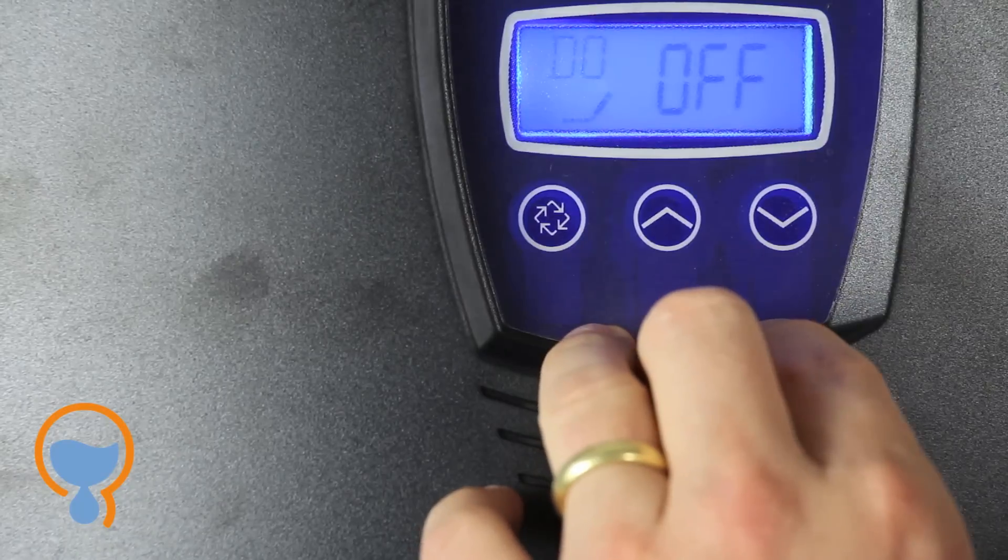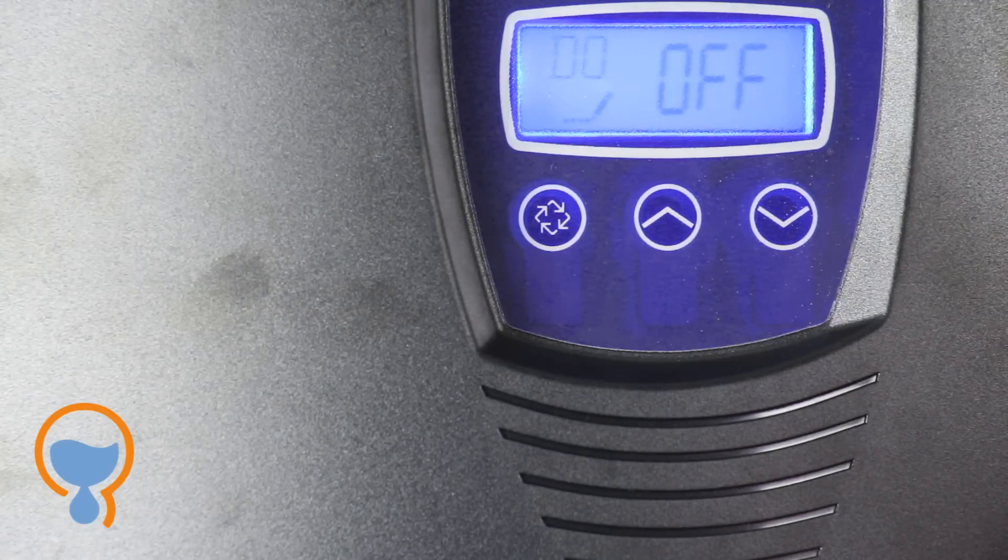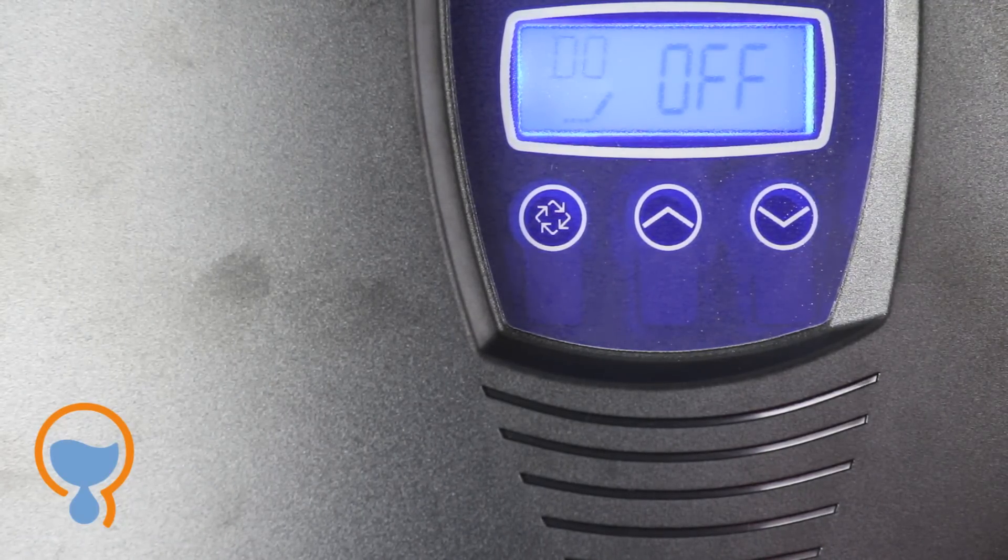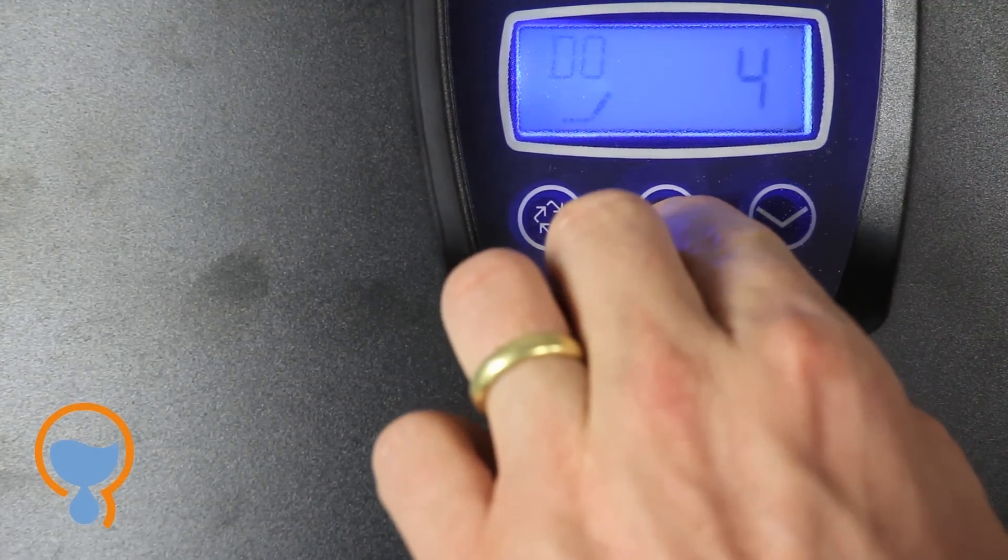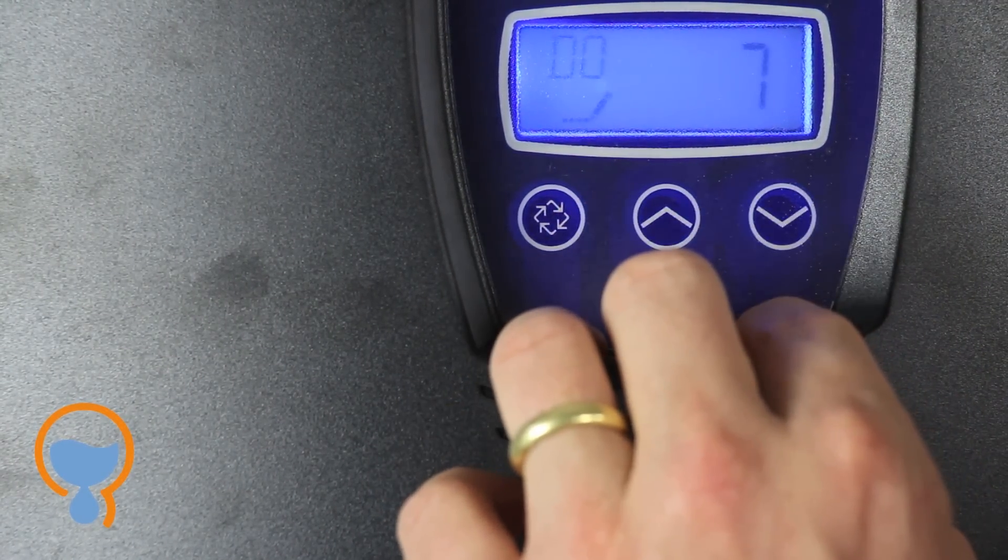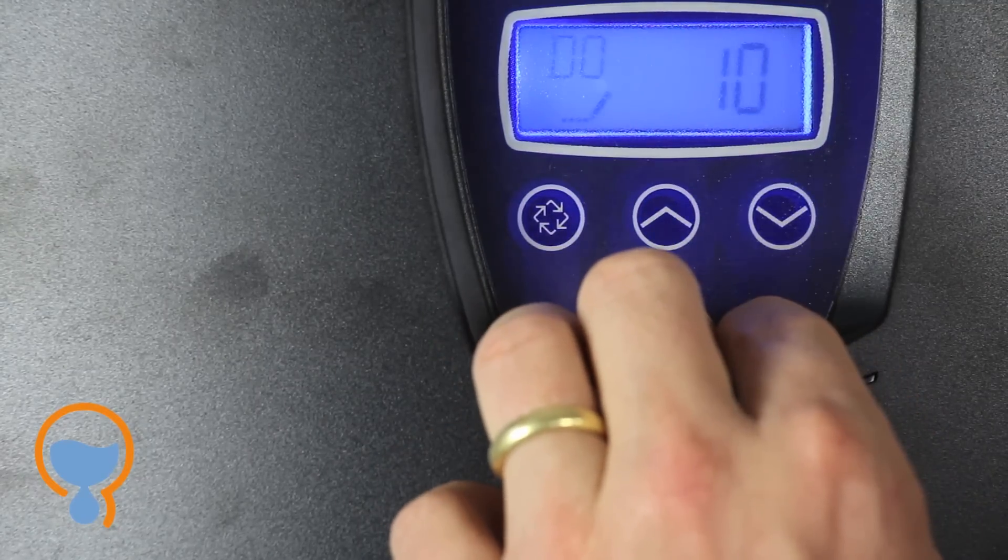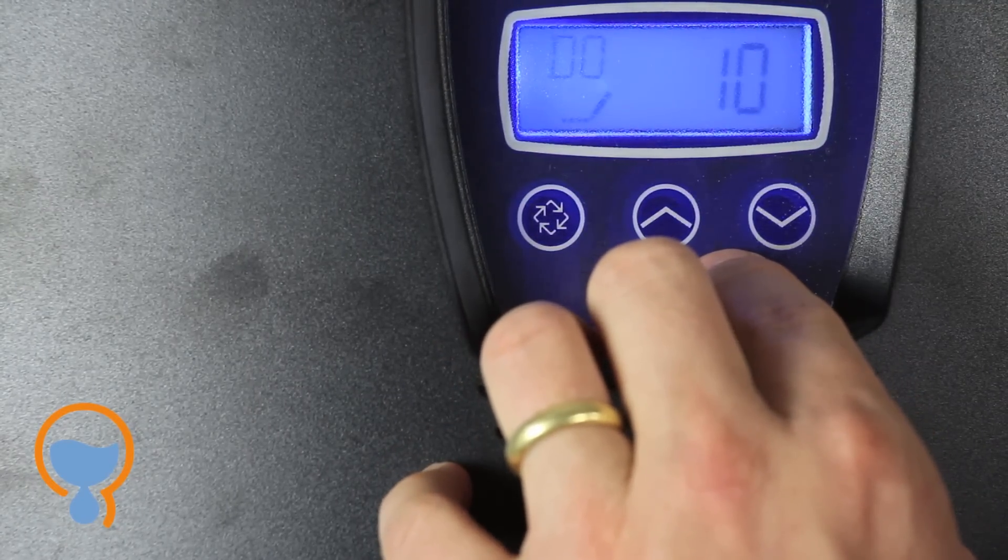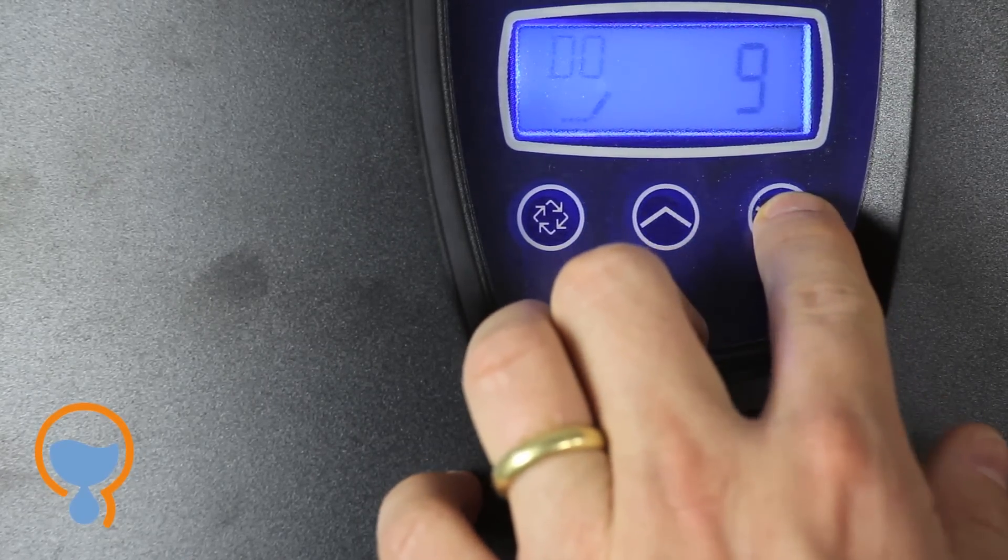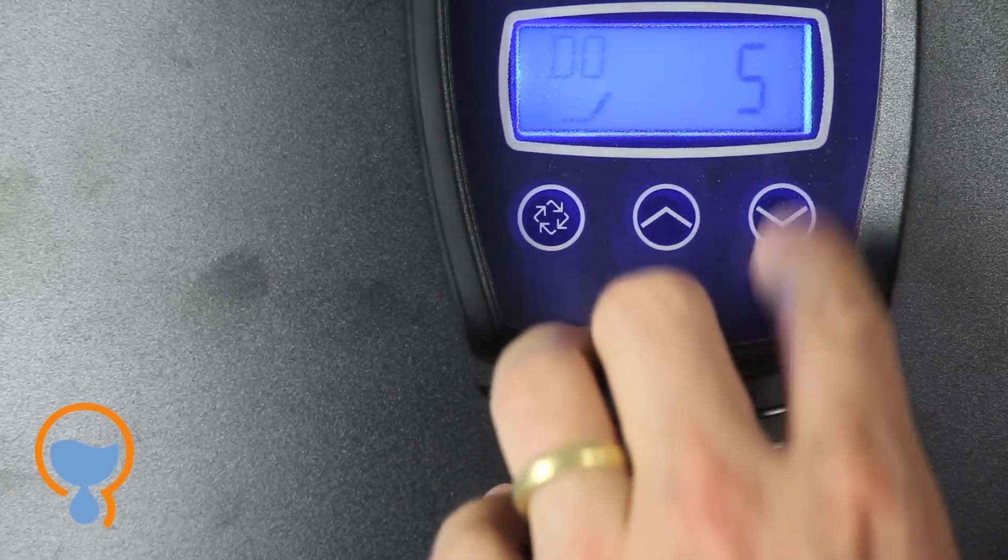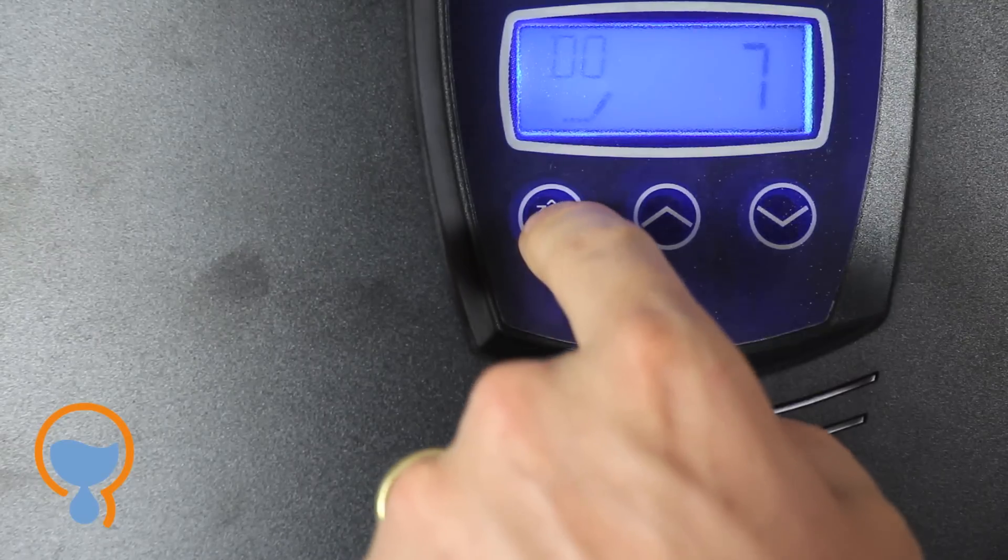Day override. Day override tells the softener to regenerate after a certain number of days has elapsed if it hasn't already regenerated because of the amount of water that's been used. If you're on a well you don't want it to go any more than 7 days between regenerations. So you can use a 7 value. If you're on city water you can use a value of 10. If the water that you've got has exceptionally high iron then you don't want to go more than 5 days. So if we assume very high iron we'd set it to a 5 day override. Otherwise for well water it would be 7. So that's what we'll use here.